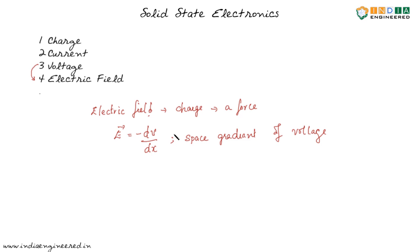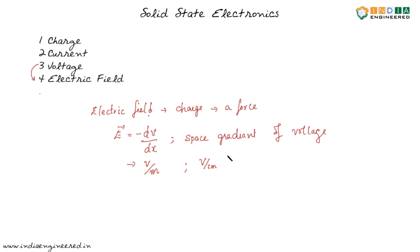Now what is the unit of electric field? The unit of voltage is volt, and that of distance is meter. So the unit of electric field is volt per meter. In these lectures we will be using volt per centimeter as a preferable unit, because we will be dealing with dimensions which are really small compared to meter.